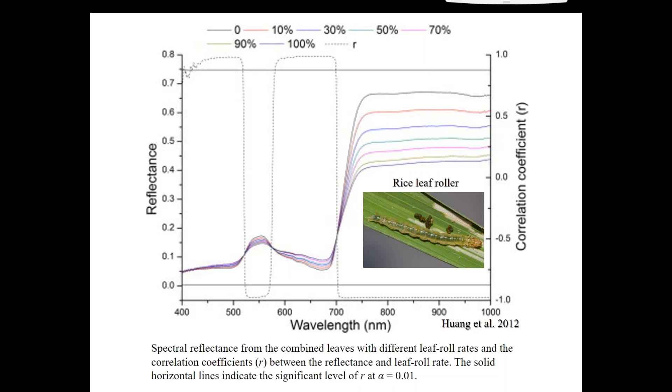We see the same response with a caterpillar called the rice leaf roller in rice, which rolls leaves. And this was interesting because it shows incrementally depending on the rate of leaf rolling, especially in the near-infrared. We can see that that reflectance is dropping, so it's absorbing more of that spectrum. And as you can see in the visible, there's something going on there as well.